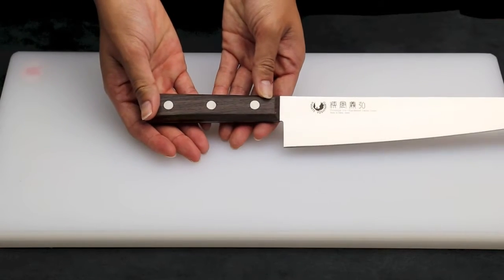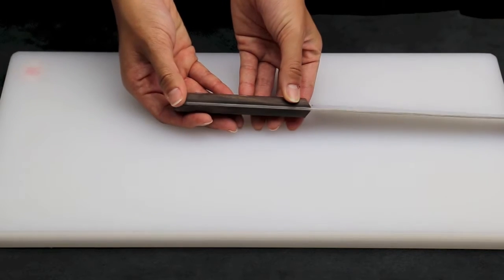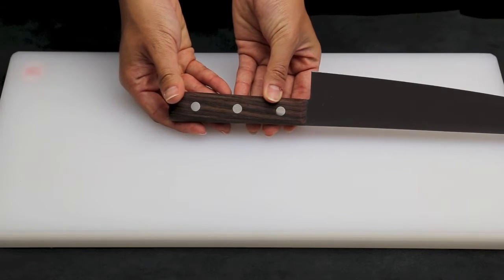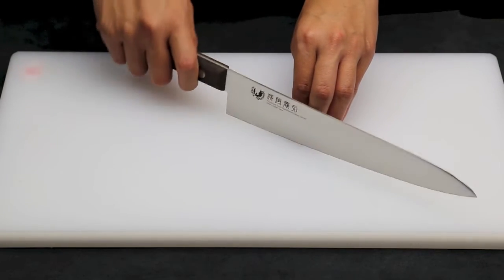The powder steel provides an HRC of 63-64 for long-lasting edge retention for those who work in demanding high-paced kitchens. The handle is made with rosewood and it is full-tanged for comfort and balance.